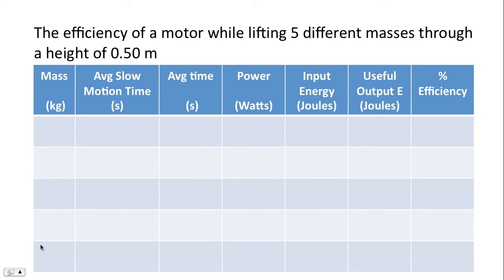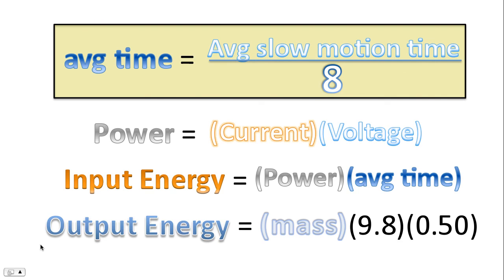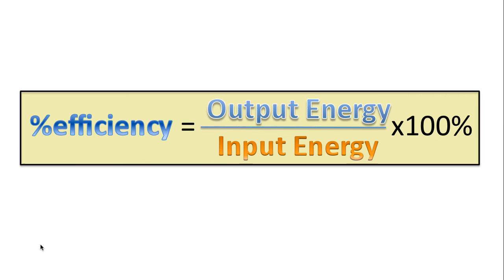Now we're going to take that table and process the data to ultimately determine the final column, which is the percentage efficiency. Here are the formulas to assist us. To get the average time, we need to take the average slow motion time and divide by 8. This is because the video increases the length of time by a factor of 8 when we record things in slow motion. Power is the product of current and voltage. Input energy is the product of power and average time. And output energy is the mass multiplied by 9.8, the acceleration due to gravity, multiplied by the height that it was lifted by, always 50 centimeters or 0.50 meters. And here's our final formula for percentage efficiency. It's output energy or more commonly called useful output energy times 100% divided by the input energy.